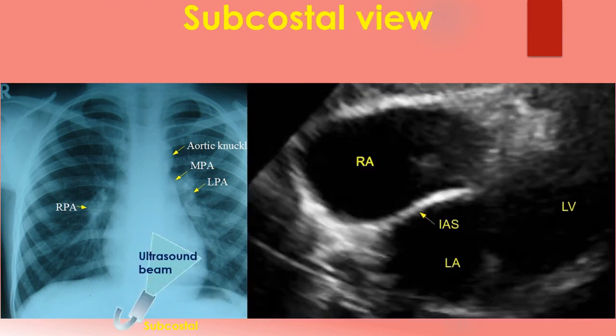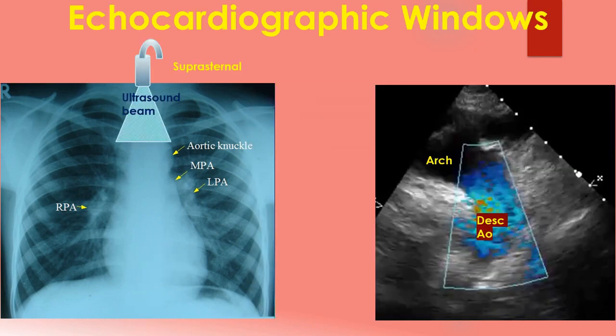The subcostal view is obtained from below the xiphisternum in the epigastrium. Transducer rotation is needed to get subcostal 4-chamber and short axis views. The interatrial septum is best imaged in this view. Assessment of the inferior vena cava for checking hydration status is also visible from this view. The subcostal view is a favourite view of paediatric echocardiographers. The suprasternal view is useful in imaging the arch of the aorta and nearby regions of the ascending and descending aorta. Coarctation of aorta and patent ductus arteriosus can be imaged in this view. The image shows the blue-coloured descending aortic flow on colour Doppler, and the gradient of coarctation can be assessed in this view.